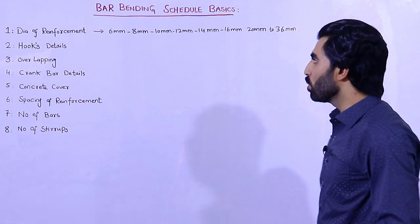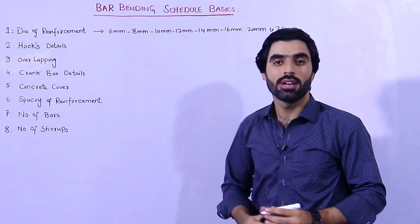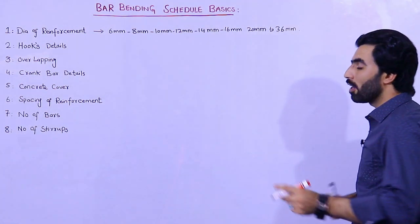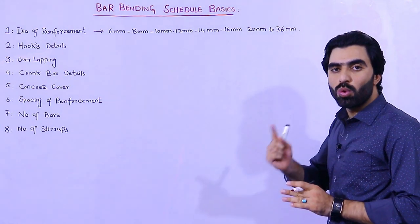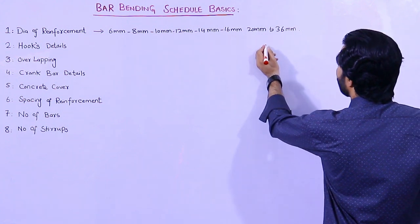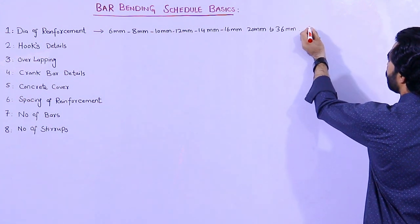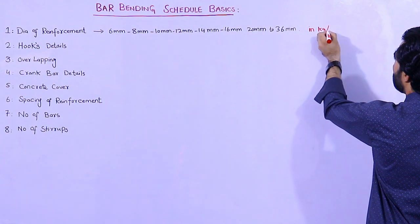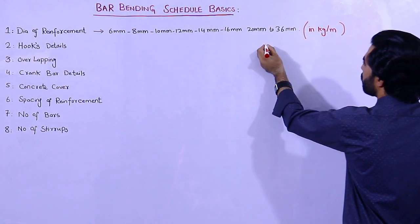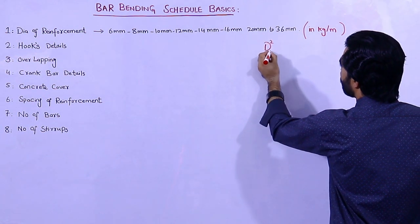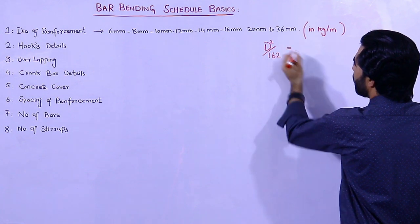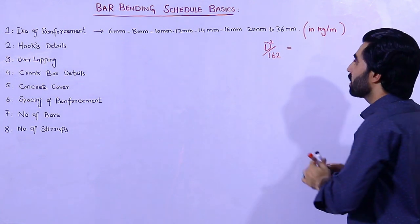So how can you find the weight of steel for different diameters? For that we have a formula to find the weight of steel bar in kg per meter. To find the weight of steel in kg per meter you can use the standard formula: D squared divided by 162, where D is the diameter of the steel rod in millimeters.